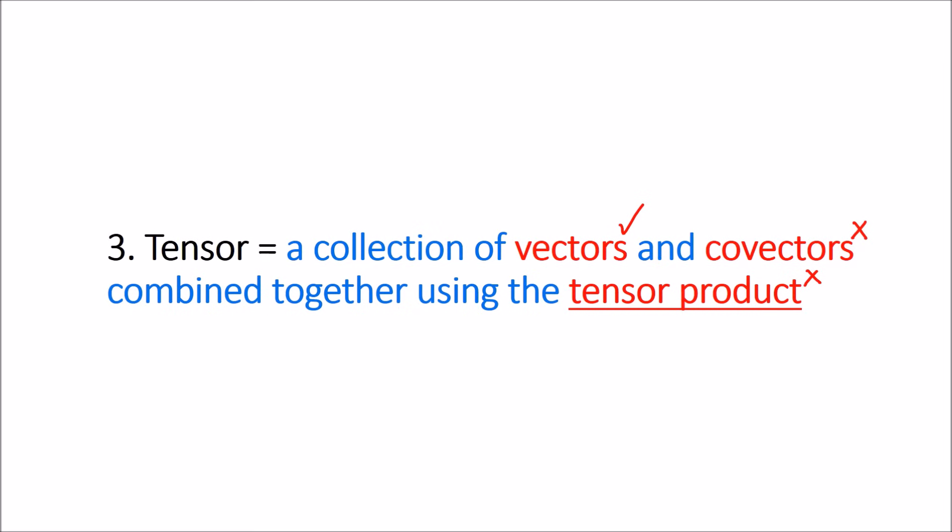But once we understand what all these things mean, it's actually a really simple definition. Tensors are just vectors and co-vectors combined together in different ways using this thing called the tensor product.